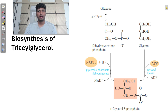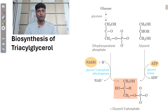Now let us understand how a particular phospholipid is formed. As we know, phospholipids can be monoacylglycerol, diacylglycerol, or triacylglycerol. For the formation of a phospholipid we need two compounds: one is glycerol and the other is a fatty acid. We already know the formation of fatty acids, so let us understand how glycerol is formed.